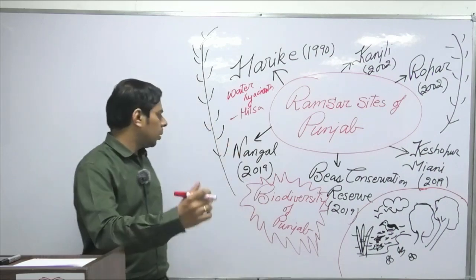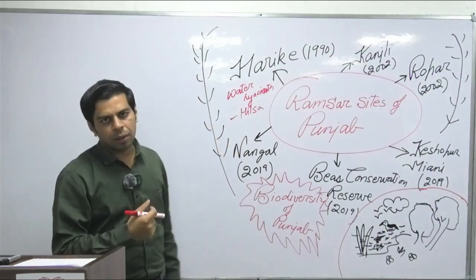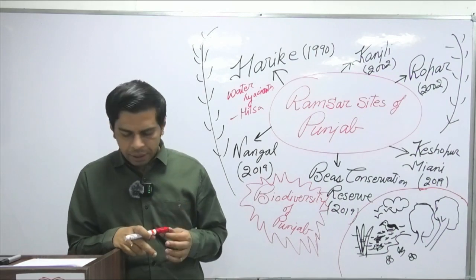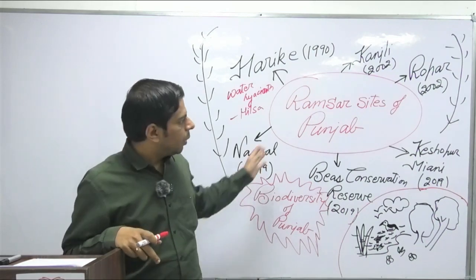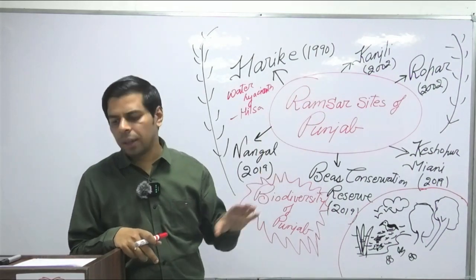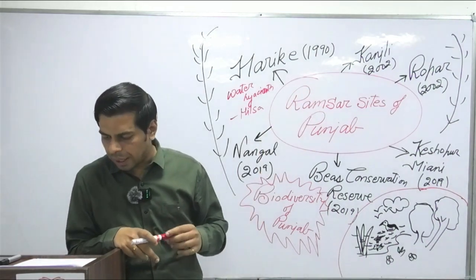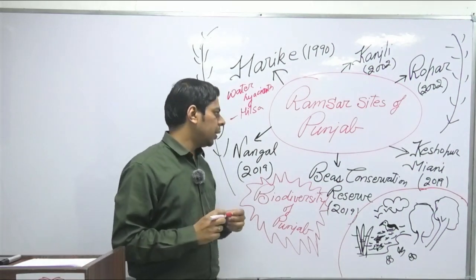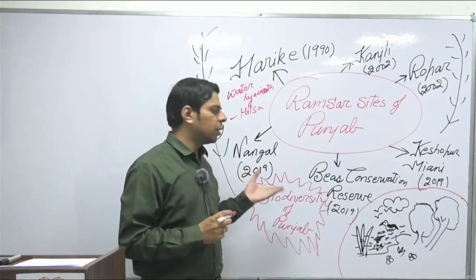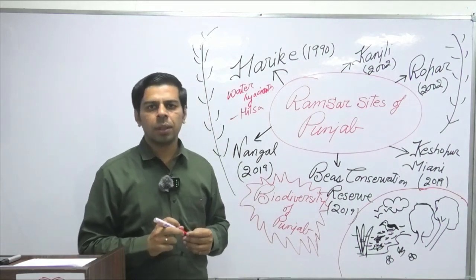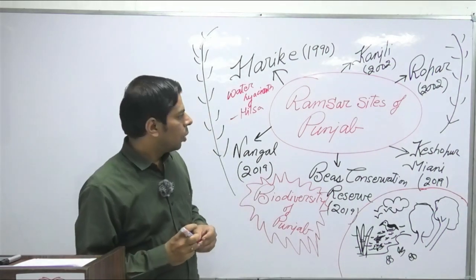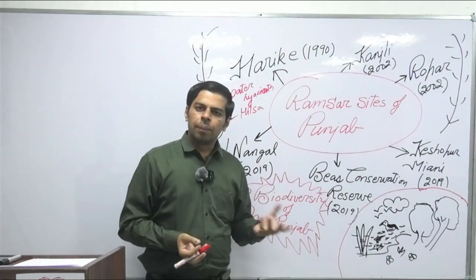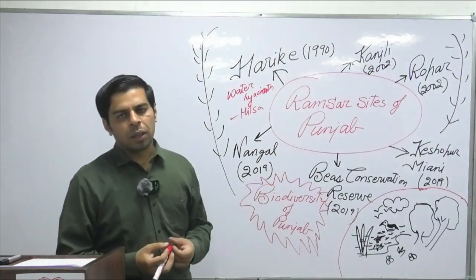The fourth Ramsar site is Nangal Wetland, notified in 2020. It has similar points to Ropar — it is a man-made wetland, an artificial lake called Nangal. It again satisfied the criterion of 20,000 water birds, even though there are limited species associated with Nangal. This is a relatively straightforward site to remember.